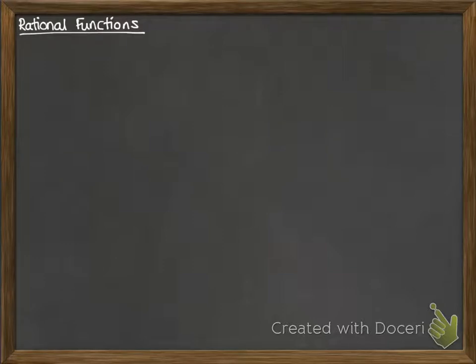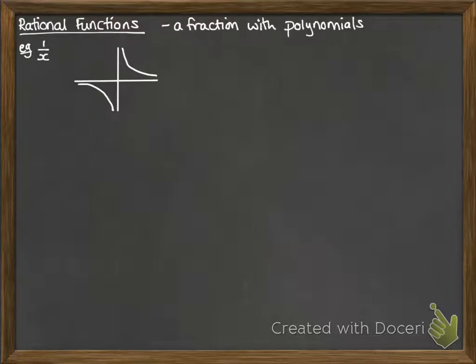So rational functions. This is where we have a fraction with polynomials. So, for example, 1 over x. That looks like this. We also have 1 over x squared, which is very similar, but we don't have the negative quadrant over there. It gets reflected up into the positive y values.